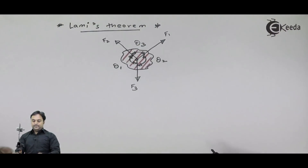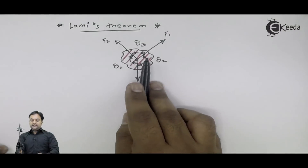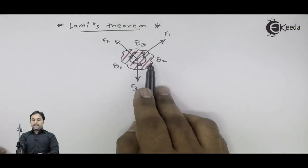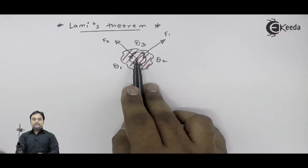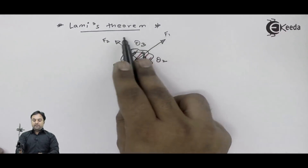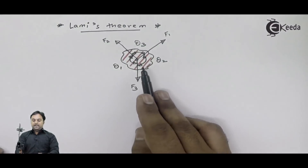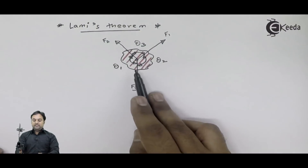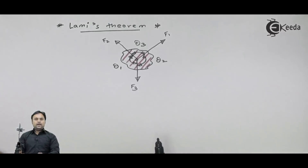Here I have a diagram in which I am taking a body. At a single point, I am having three forces — F1, F2, and F3 — and their inclinations are given.